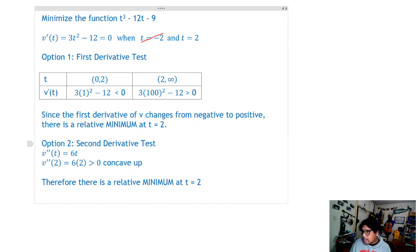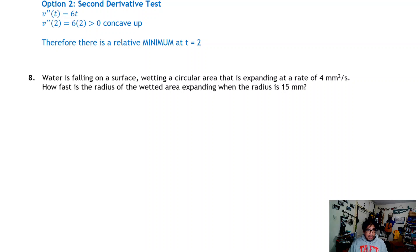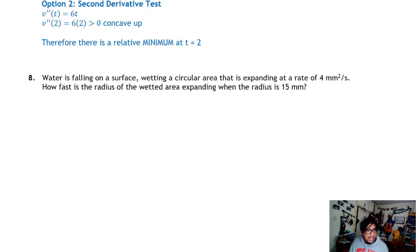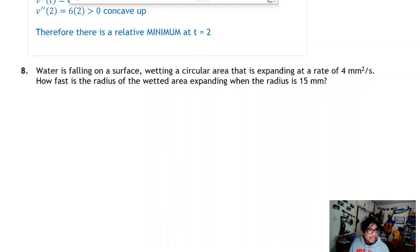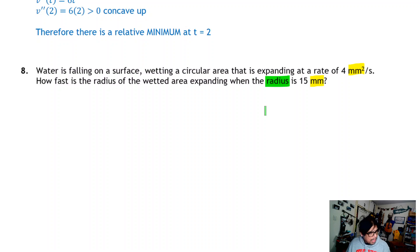Let's take a look at question 8. Water is falling on a surface, wetting a circular area that is expanding at a rate of 4 square millimeters per second. How fast is the radius of the wetted area expanding when the radius is 12 millimeters? First, let's check that all units are consistent — we have square millimeters per second and millimeters, so nothing is a problem. I also want to make sure this problem isn't tricking me by giving the diameter instead of the radius; here I have the radius, so I'm okay to substitute that value.